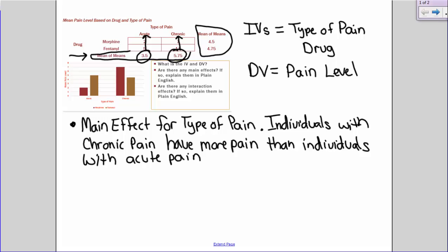Alright. So we have a main effect for type of pain. Do we have a main effect for type of drug? Not quite, right? Those two values are pretty darn close to one another, so I'm not going to say that we have a main effect for the type of drug itself. But then the next question, is there any interaction effects? So does the effectiveness of the drug depend on the type of pain that's being experienced, acute, short-term, or chronic, long-term?